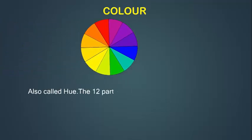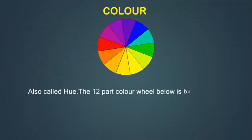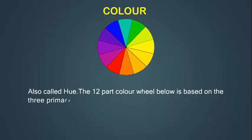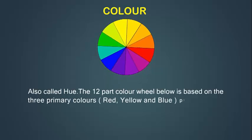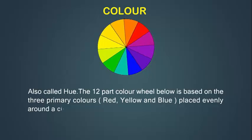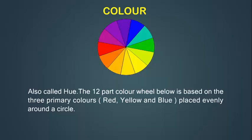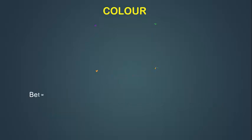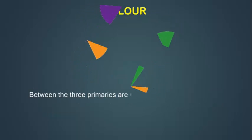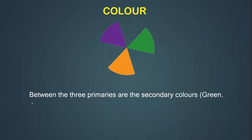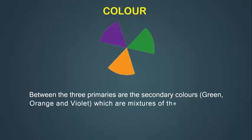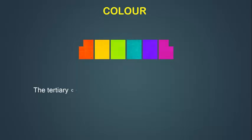Color, also called Hue. The 12-part color wheel is based on the three primary colors: red, yellow and blue, placed evenly around the circle. Between the three primaries are the secondary colors — green, orange and violet — which are mixtures of the two primaries they sit between. The tertiary colors fall between each primary and secondary.